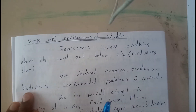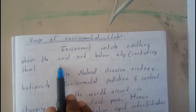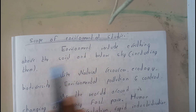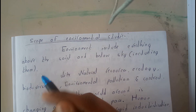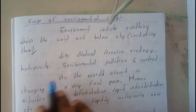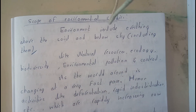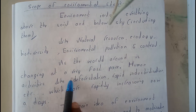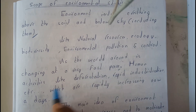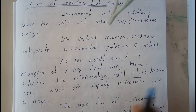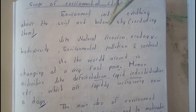Now let's go through the scope and importance of environmental studies. Environmental studies includes everything above the soil and below the sky, including them. This is an important point to remember. It covers natural resources, ecology, biodiversity, environmental pollution and control, etc. As the world around us is changing at a faster pace, human activities like deforestation and rapid industrialization are rapidly increasing nowadays.